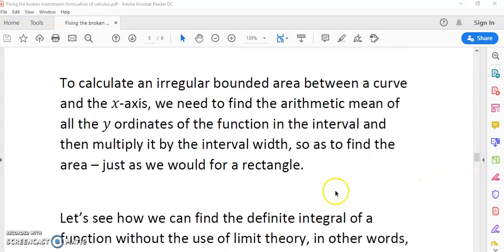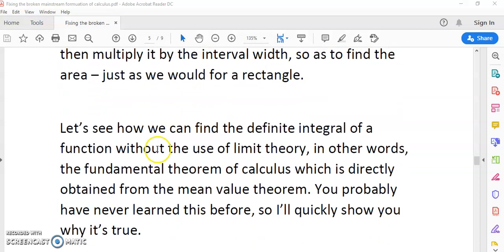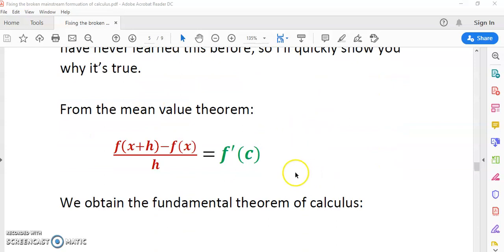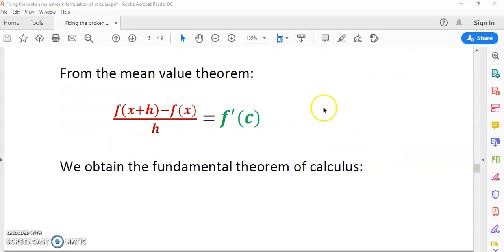To find an irregular bounded area between a curve and the x-axis, we actually need to find the arithmetic mean of all the y-ordinates of the function in the interval and then just multiply it by the interval width. The interval width turns out to be the arithmetic mean of all the horizontal line lengths, and of course the mean of the y-ordinates is the arithmetic mean of the vertical line lengths in the bounded region that we're trying to find.